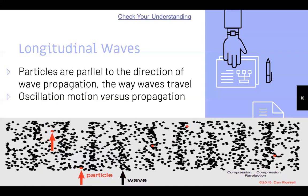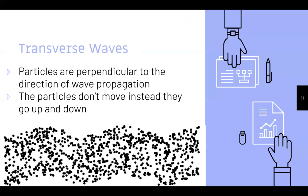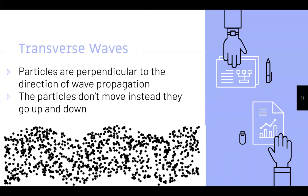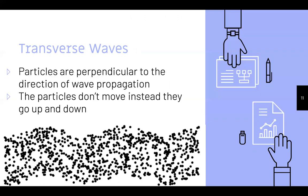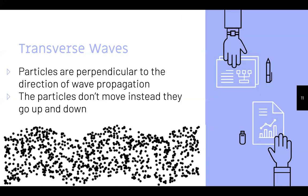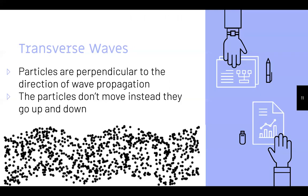In contrast, transverse waves: particles are perpendicular to the direction of wave propagation. The particles don't move left to right — instead they just go up and down, north to south. A particle will only follow that short path up and down, never going left to right.